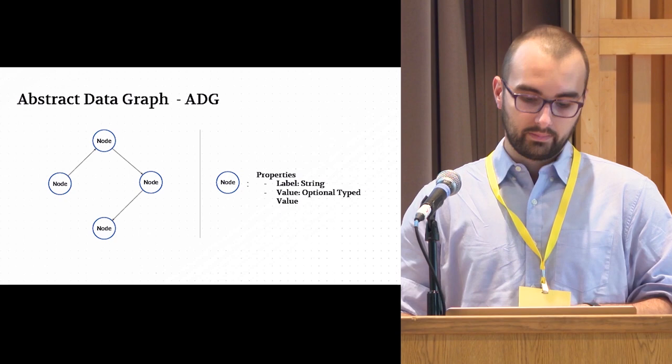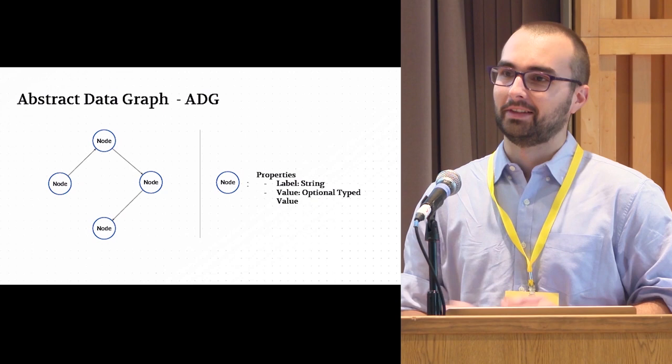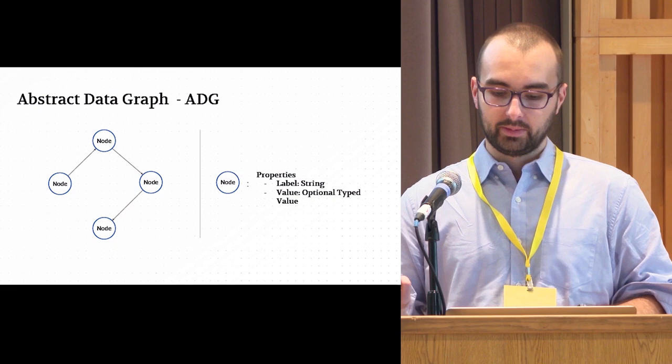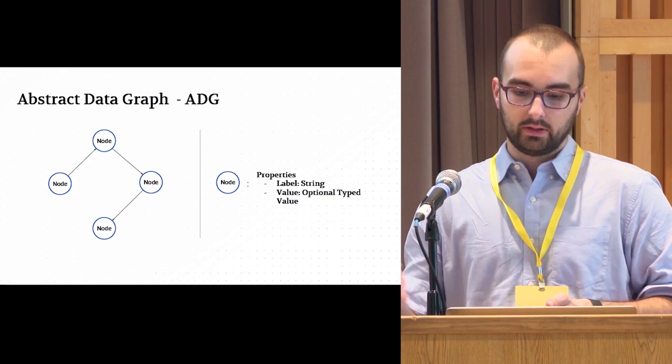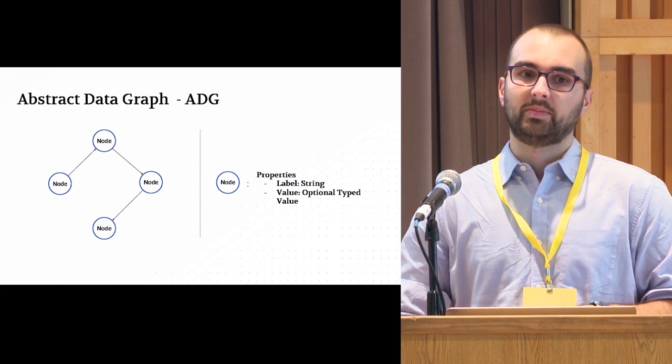The way the ADG works is very simple. It's a directed graph with two properties: a label and a value. The value can be optional and it's typed — types include strings, booleans, integers, floats, and so on. With this data structure we're able to abstract away pretty much anything that comes in.